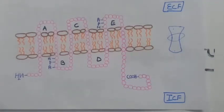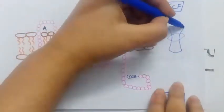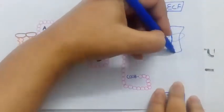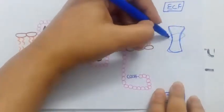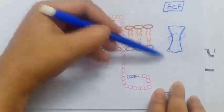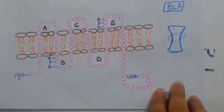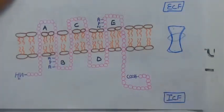The NPA motif gives aquaporin an hourglass shape — narrow in the middle and wider at the ends. Because of this hourglass shape, aquaporins are selective in nature; they only allow passage of specific molecules, most specifically water molecules.